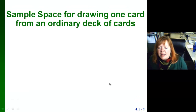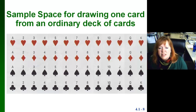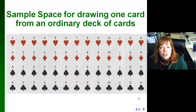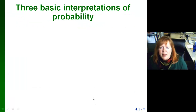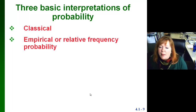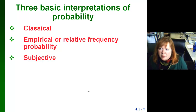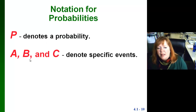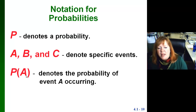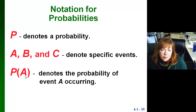Drawing one card from an ordinary deck of cards — if I'm looking for a sample space, there are 52 cards in a deck. There are hearts, diamonds, spades, and clubs, with 13 cards in each suit. So there are 52 possible cards. There are three basic types of probability: classical — like Mozart, created first — empirical, which uses frequency charts, and subjective, where you're making a prediction based on past probabilities. Capital P denotes probability; A, B, and C are events. So P(A) denotes the probability of event A occurring.